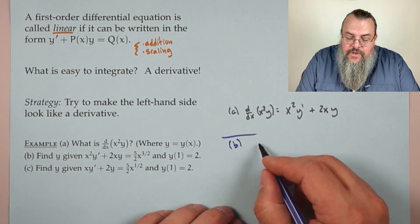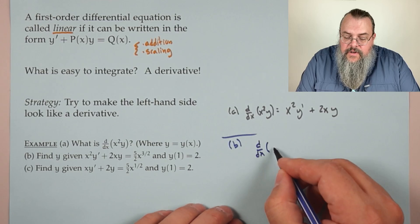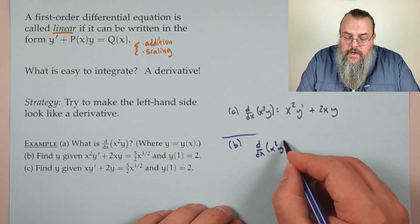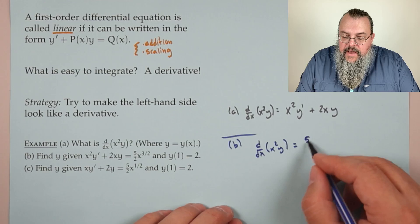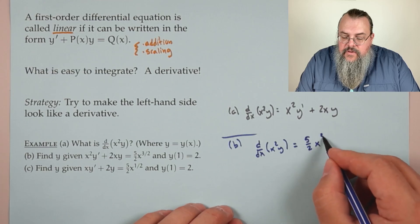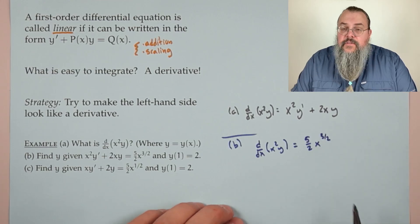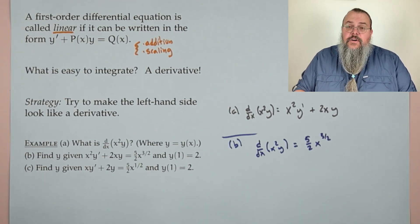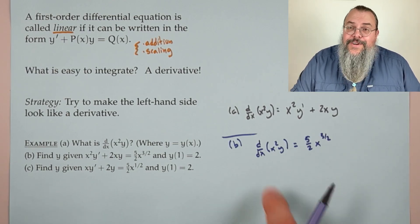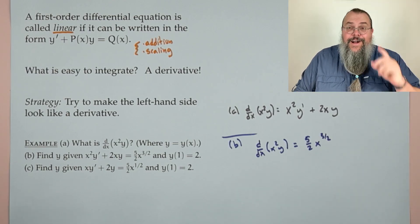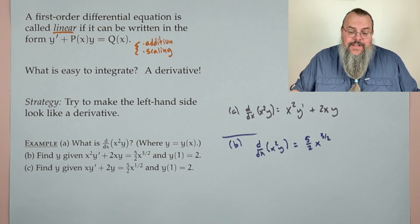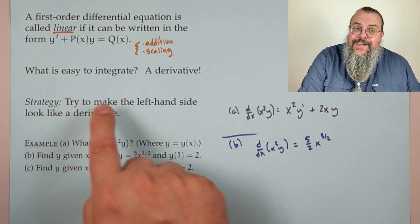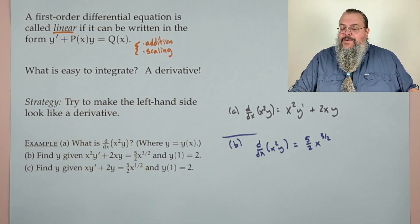The great aha: we can write part (b) as the derivative of x²y equals (5/2)x^(3/2). Now we say — that's a derivative! We know how to take an antiderivative of that, because a derivative is easy to integrate.